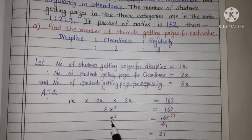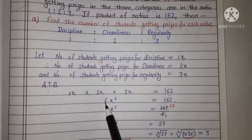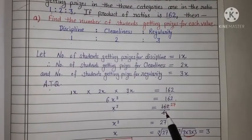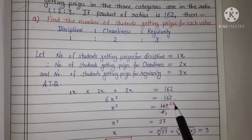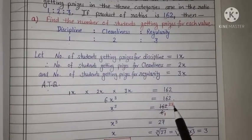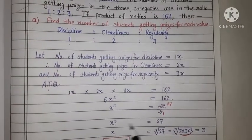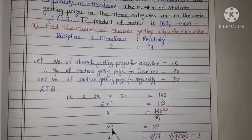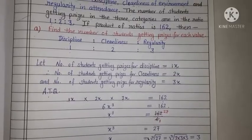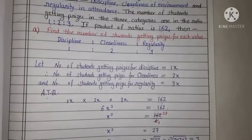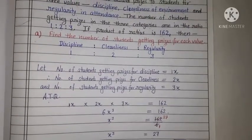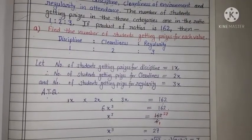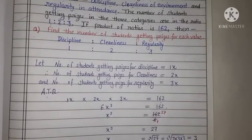x cube ki value find karenge. 6 left hand side mein product mein hai, right hand side mein division mein chala jayega. Cancel karenge, 6 ban ja, and 27, 6 ja 162 hoge. So x cube is equal to 27 banega. Ab hum x ki value find karenge, cube left hand side wala, right hand side mein cube root ban jayega. So we write cube root of 27. Aur 27 ka cube root hamare paas hamein already learned hai, that is equal to 3.